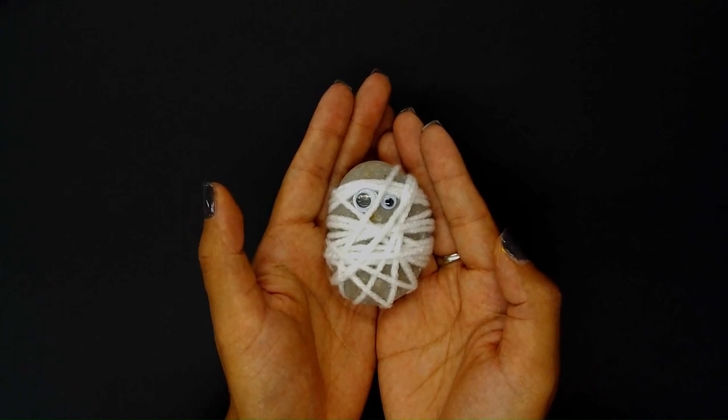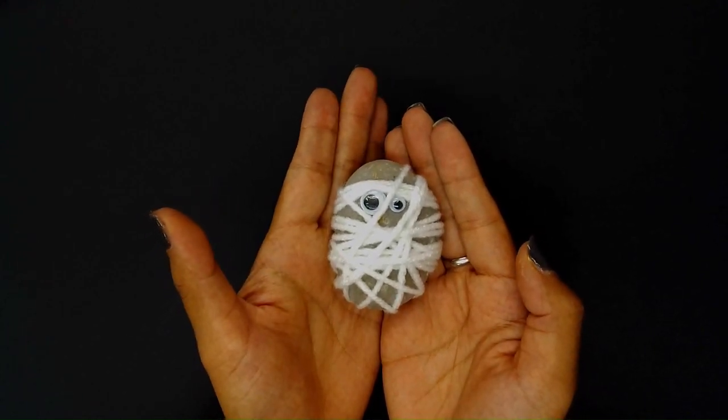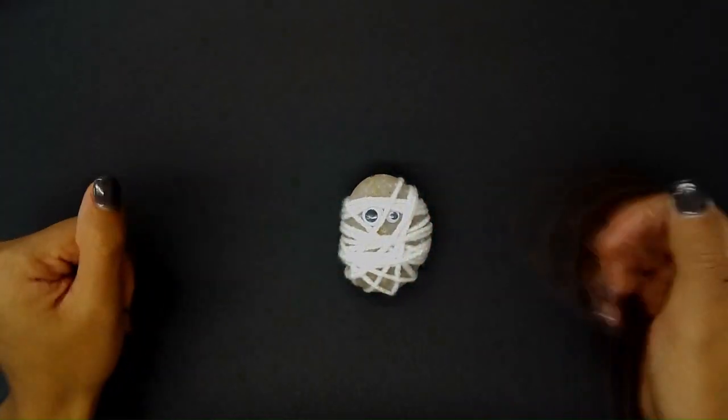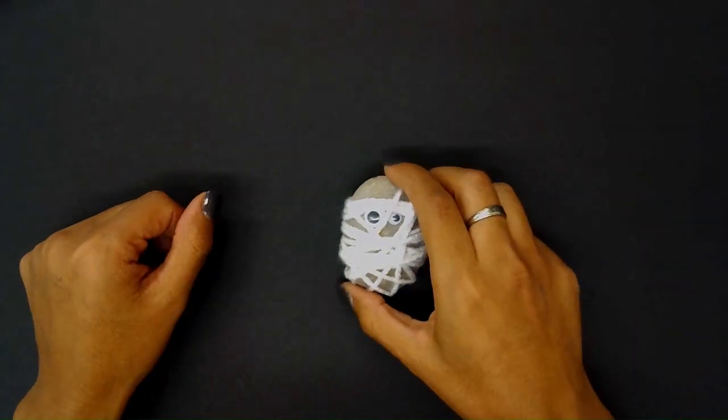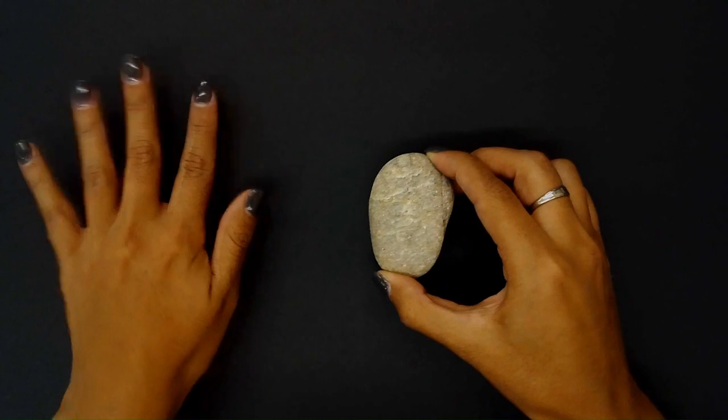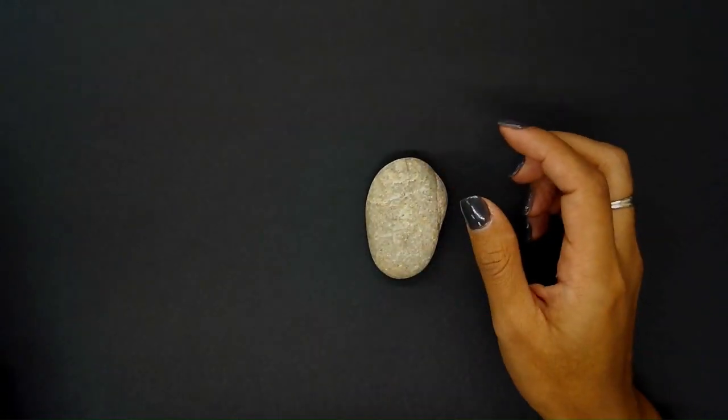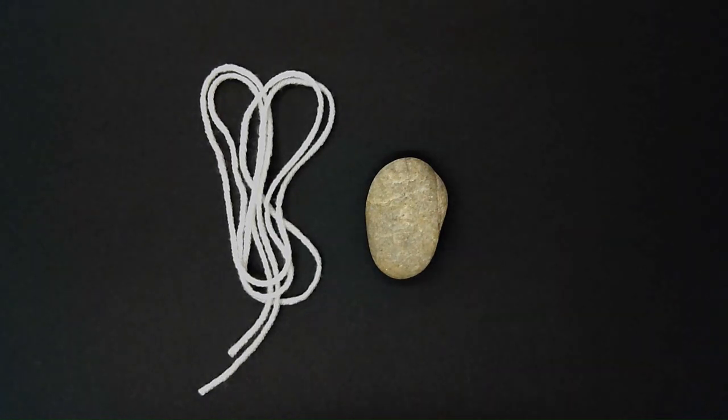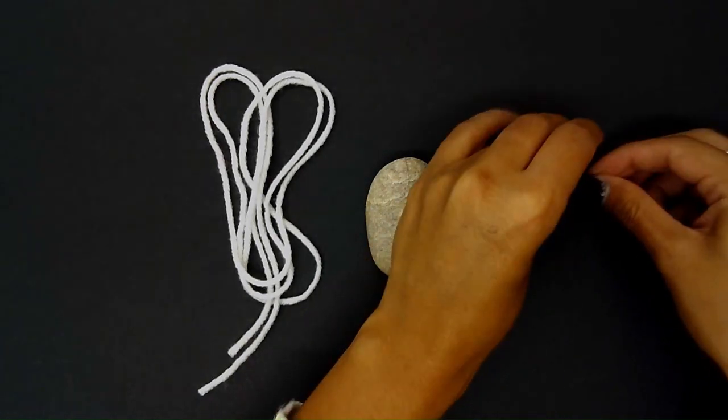Hi everyone, today we are going to be making these mummy rocks. Before we get started, you're going to need to go outside and find a large flat rock much like this one right here. The next things that we're going to need are a piece of yarn or string, preferably white for our mummy, and a pair of googly eyes.